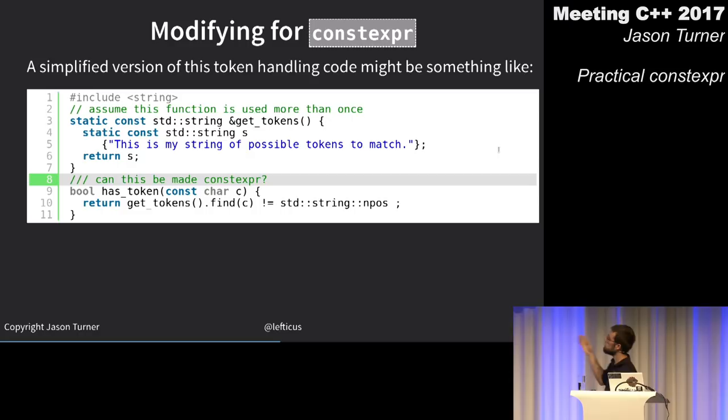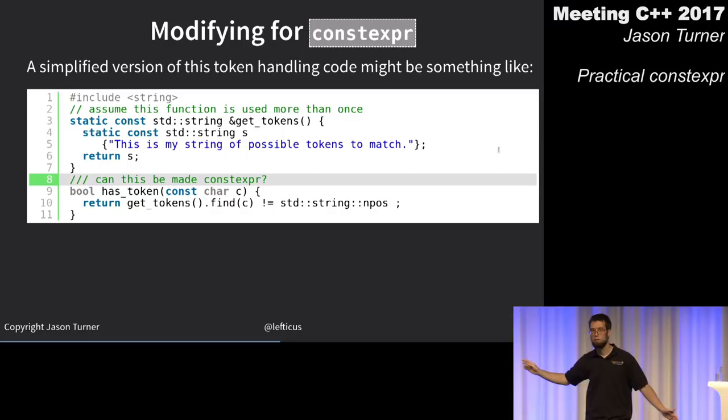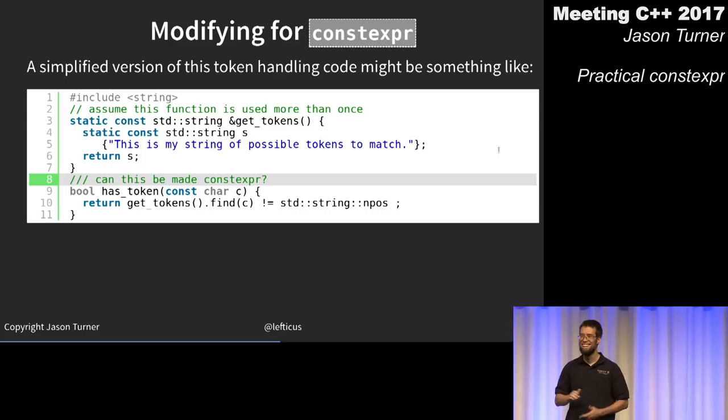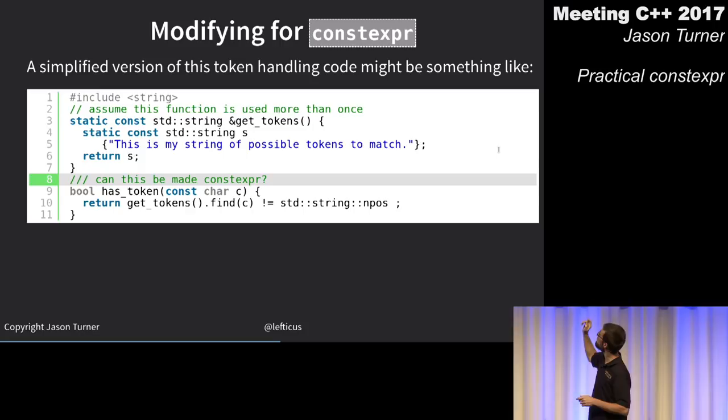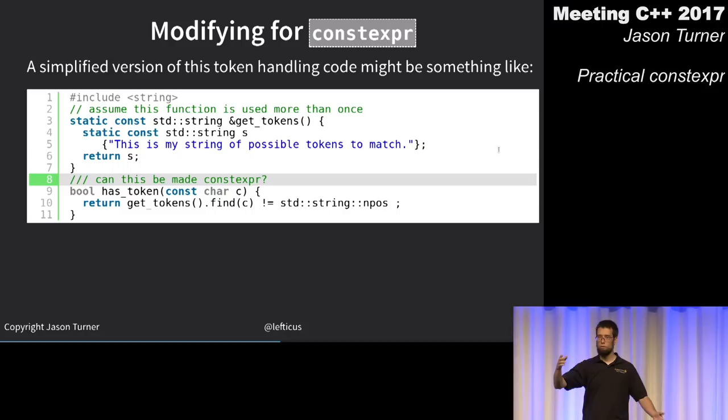No — because get_tokens is not constexpr, and because it has a static variable, and more importantly because that static variable is a non-literal type (std::string).